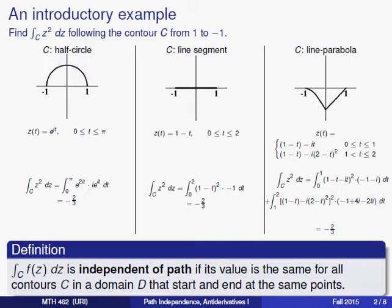Let's take a look at an introductory example. Suppose you're asked to find the integral of z squared along the contour C from 1 to minus 1, but we're given three different contours to find the integral along. The first is this half circle, the second is the line segment, and the third is this path that's made up of a line segment followed by a portion of a parabola.